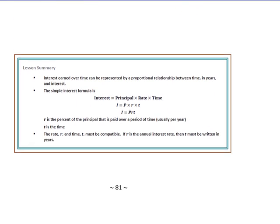In this lesson, you have learned that interest over time can be represented by a proportional relationship between time in years and interest. The simple interest formula is interest equals principal times rate times time, or I equals PRT. The principal is the amount of money you either borrow or invest. The rate is a percent, and the time is measured in years. If your time does not come in years — for example, if it comes in months such as 3 months — remember to write it over 12 to convert it to a fraction of a year. R and T must be compatible: if R is the annual interest rate, then T must be written in years.